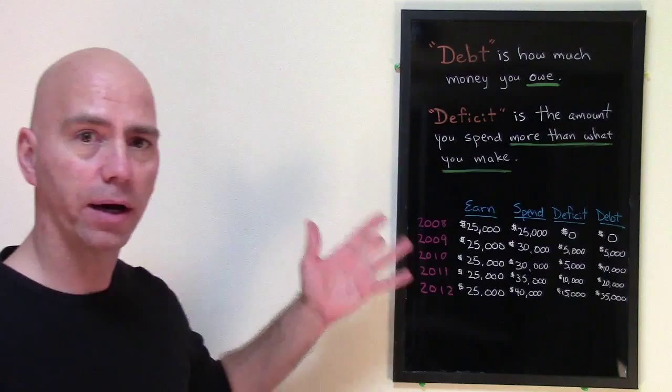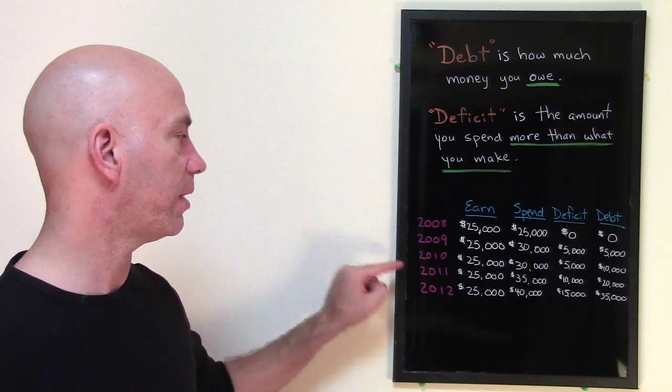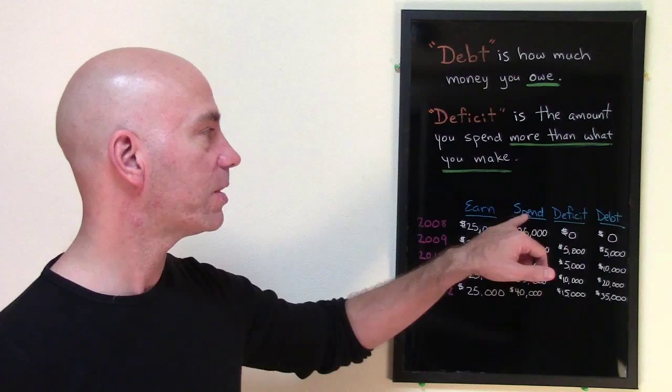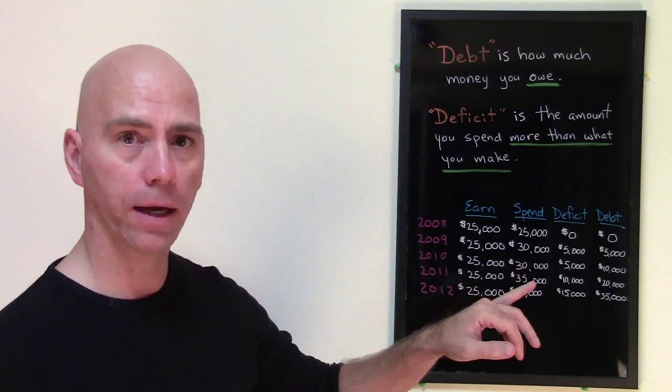Let me show you the examples here. These are the years. Let's say we're talking about the year 2008, 2009, 2010, 2011, and 2012. Now here in each column I have the money you earn, the money you spend, the deficit and the debt.